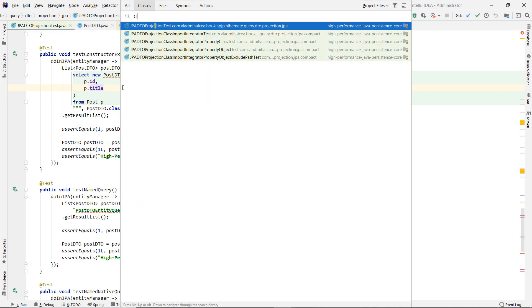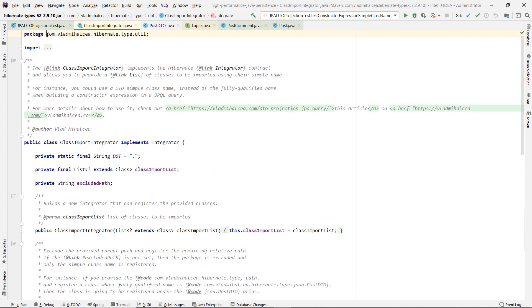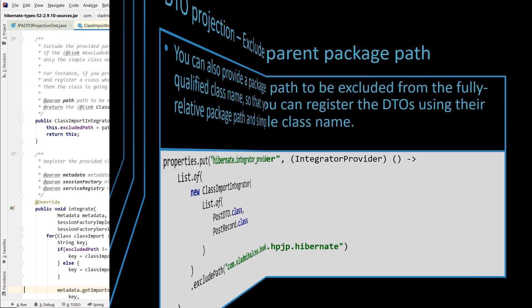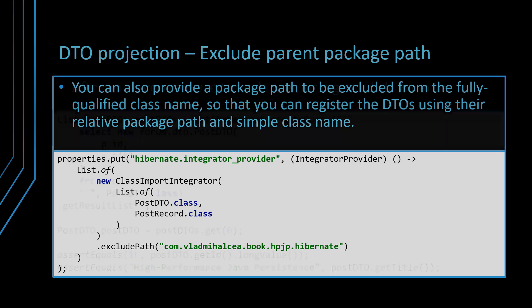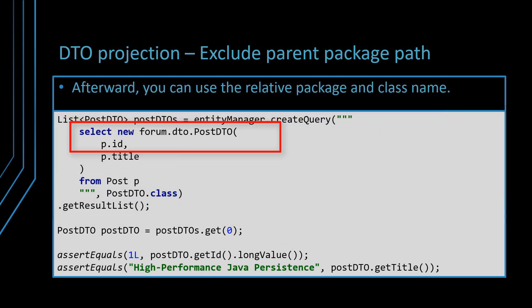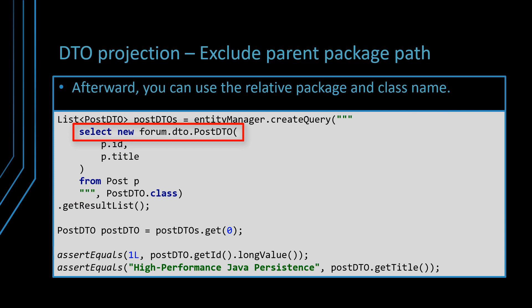Although it's very easy to write a Hibernate integrator provider that can register DTO classes, you don't really need to do that since you can use the ClassImportIntegrator implementation provided by the HibernateTypes project. If you have multiple DTOs with the same name defined in different packages, you can then register the DTOs using their relative package path and simple class name. By providing a package path to be excluded from the fully qualified class name, the ClassImportIntegrator will then register the partially qualified DTO class name, as illustrated by the following JPQL query example. This JPQL query doesn't use the fully qualified name of the postDTO class; instead, we only use the relative package path and the simple class name since the ClassImportIntegrator has registered this alias when the Hibernate session factory was initialized.